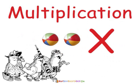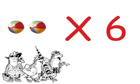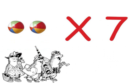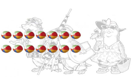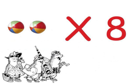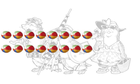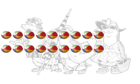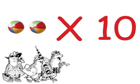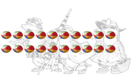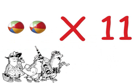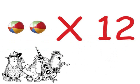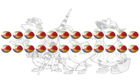Multiplication times 2. 2 times 6 is 12. 2 times 7 is 14. 2 times 8 is 16. 2 times 9 is 18. 2 times 10 is 20. 2 times 11 is 22. 2 times 12 is 24.